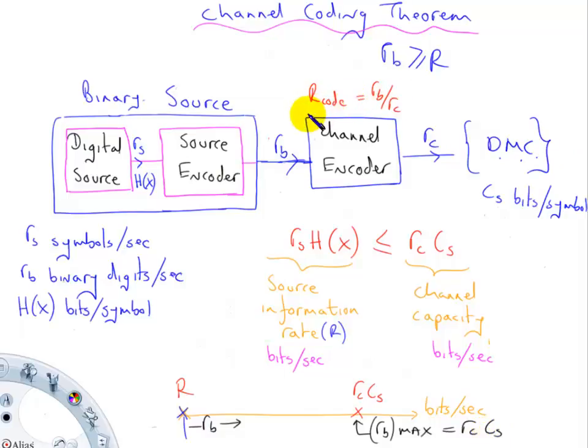And just to note that RB divided by RC is the code rate.